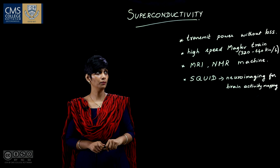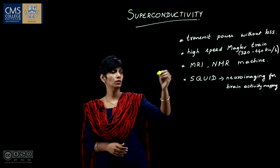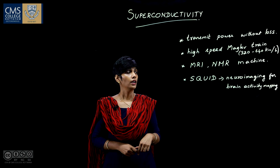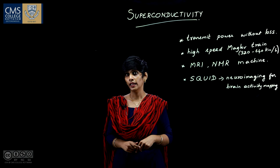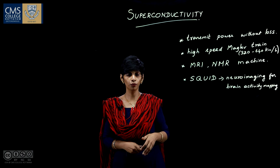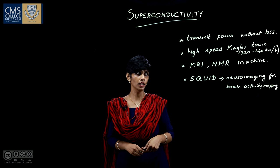Due to their special characteristics, superconductive materials can be used to transmit power without loss. They can also be used in high-speed maglev trains, which work on the principle of magnetic levitation — suspending an object in air using magnetic fields. This allows the train to float above the track with no friction and very low power consumption.